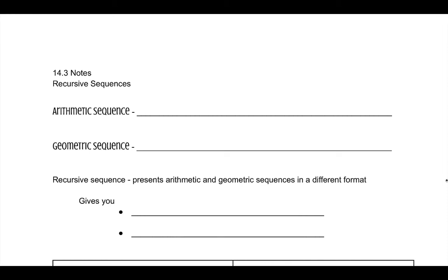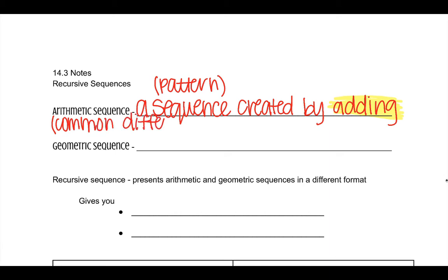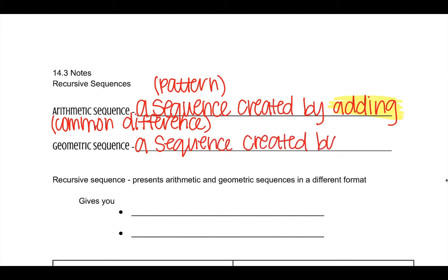Hey guys, today we're going over recursive sequences. We've been talking about arithmetic sequences and geometric sequences. Arithmetic is a sequence — which is just a fancy name for a pattern — created by adding. You're adding to get to that next term, and remember we have a common difference with arithmetic. Geometric sequence is a sequence created by multiplying.